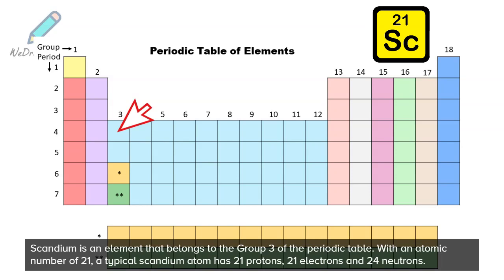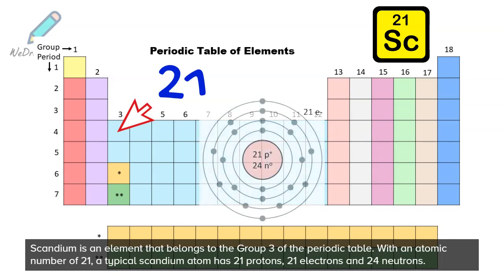Scandium is an element that belongs to Group 3 of the periodic table. With an atomic number of 21, a typical scandium atom has 21 protons, 21 electrons, and 24 neutrons.